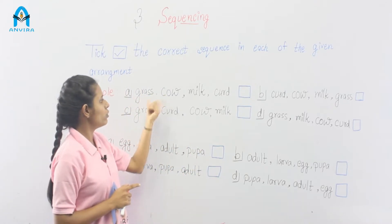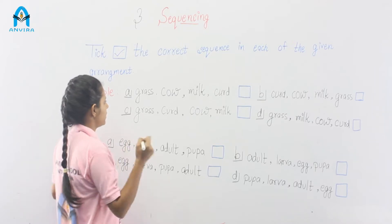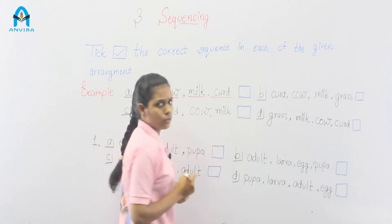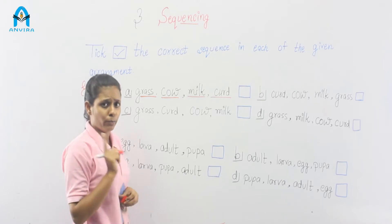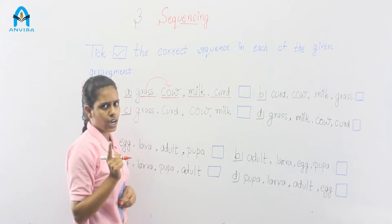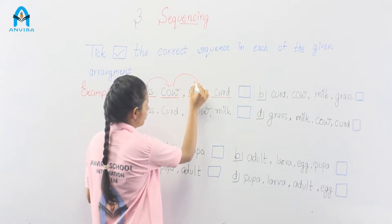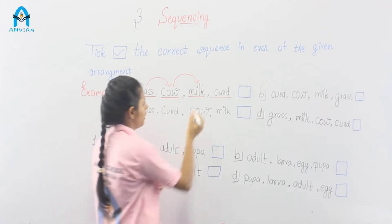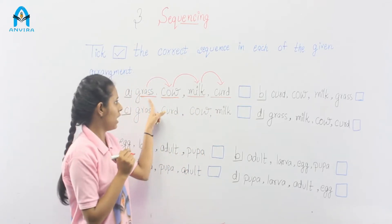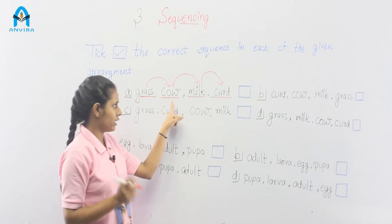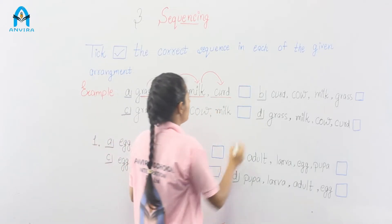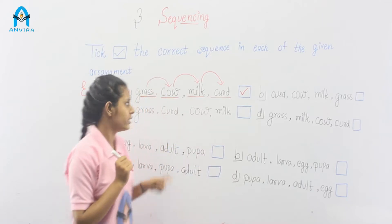For this, let's go with option A. Read the sequence: grass, cow, milk, curd. Grass is grown by the farmer, then the cow eats grass, then cow gives us milk, and we make curd from milk. This is a correct sequence. Grass is eaten by the cow, then the cow gives us milk, and curd is made from milk. This is the correct sequence.